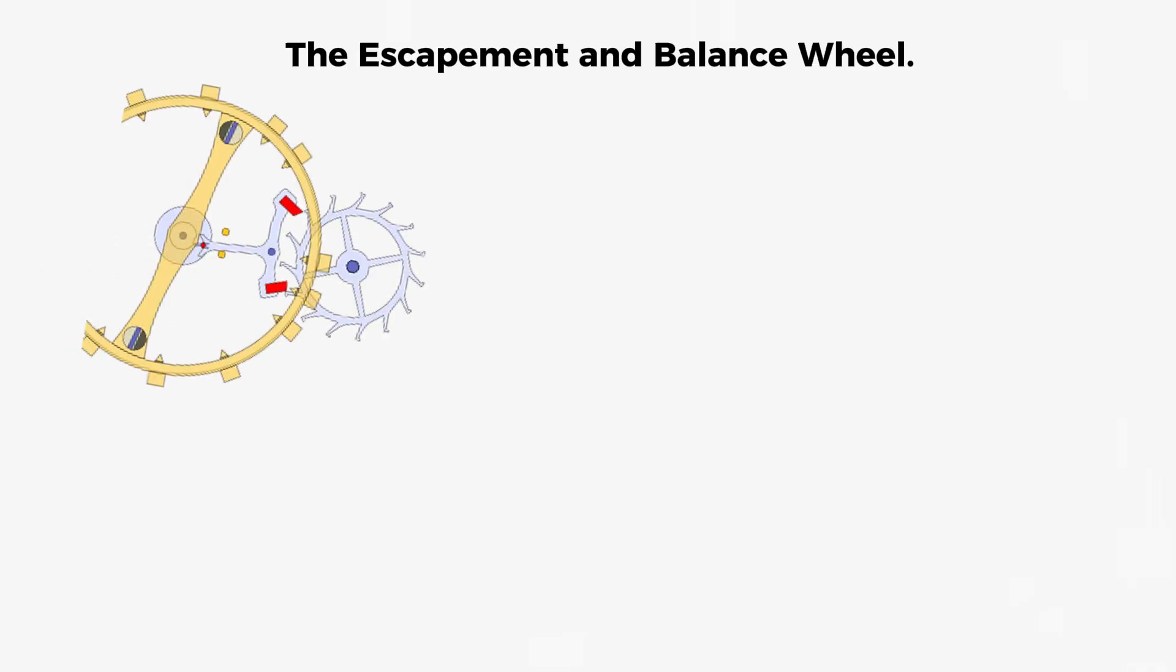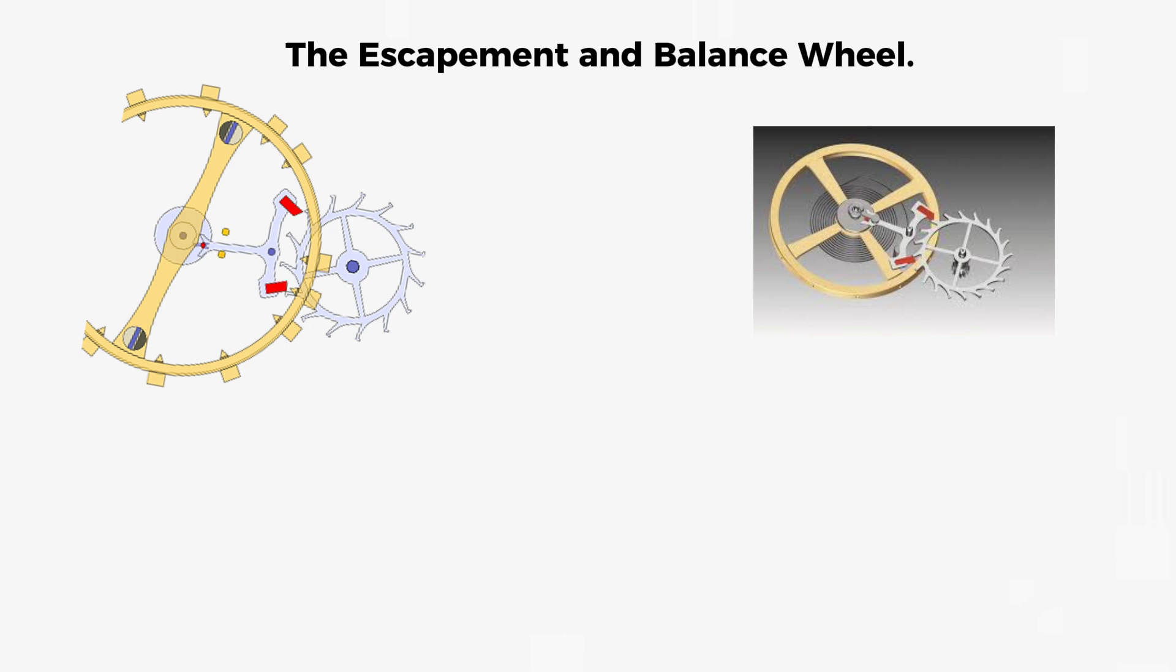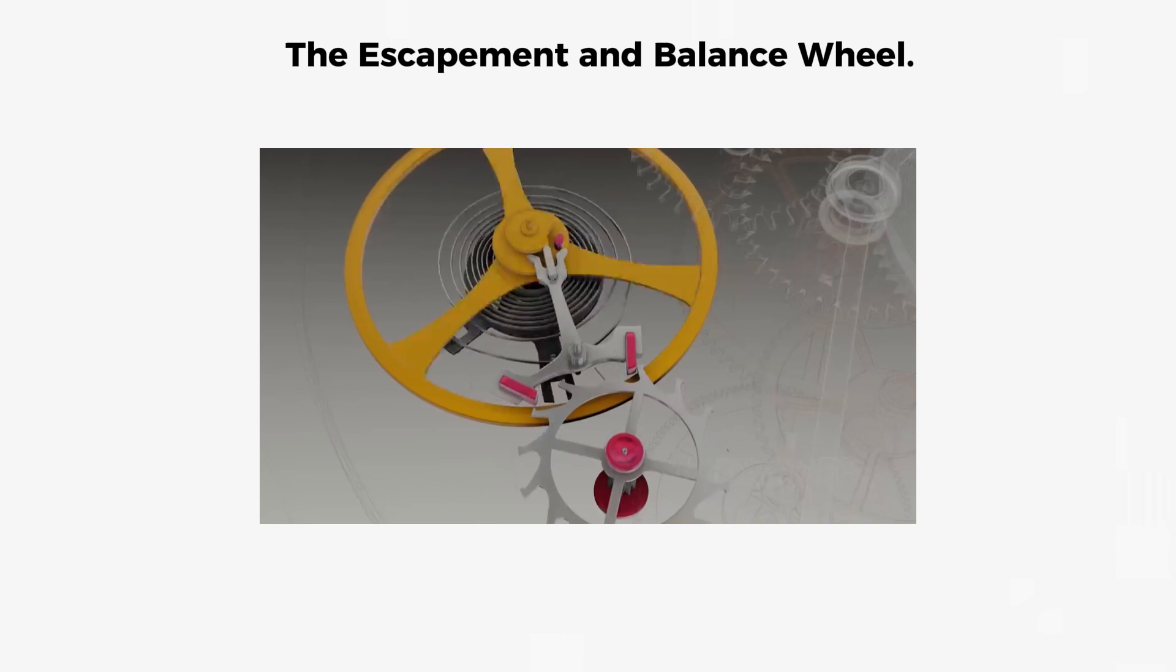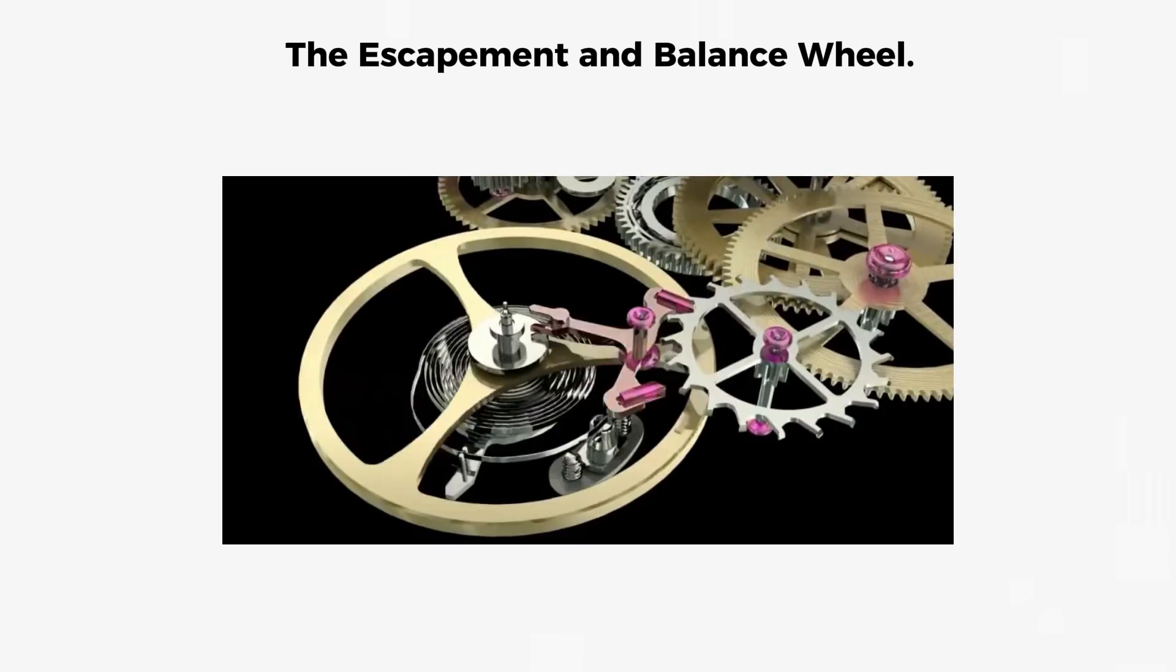The escapement and balance wheel. The escapement is where the actual timekeeping happens and it is the most critical assembly in the entire watch. Its job is to release mainspring power in small, metered increments while simultaneously keeping the balance wheel oscillating at a precise rhythm.